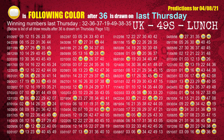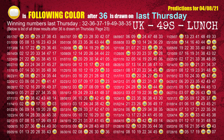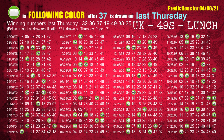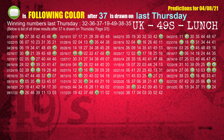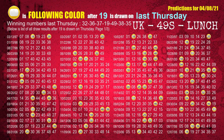The second winning number last Thursday is 36; the most frequently following color is yellow when 36 is the winning number on last Thursday. The third winning number last Thursday is 37; the most frequently following color is green. The fourth winning number last Thursday is 19; the most frequently following color is yellow.